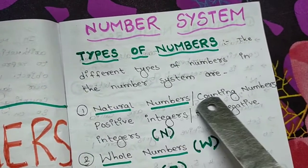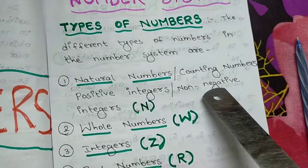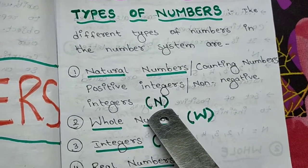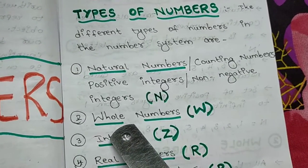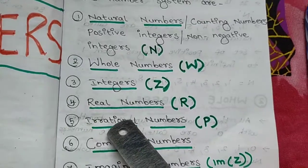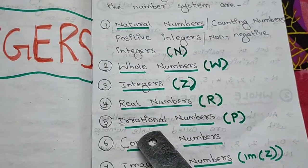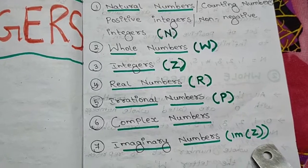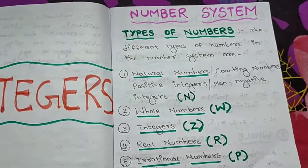Natural numbers are also called counting numbers, or positive integers, or non-negative integers. Natural numbers are represented by the letter capital N. Whole numbers are represented by capital W. Integers are represented by capital Z. Real numbers by capital R. Irrational numbers by capital P. Then imaginary numbers, which are represented by capital I.